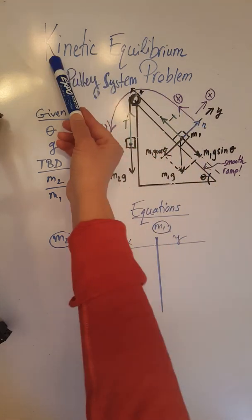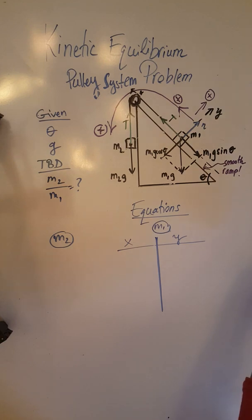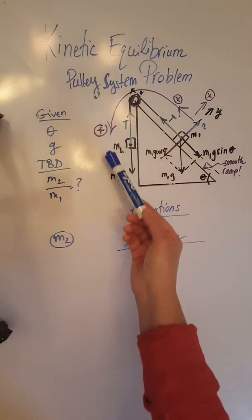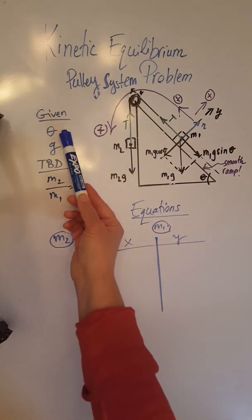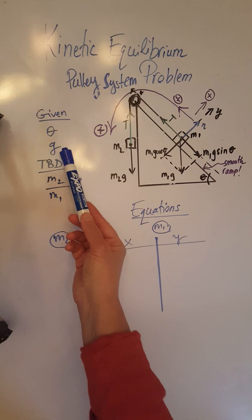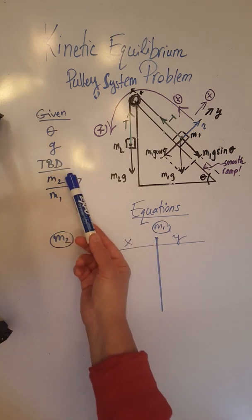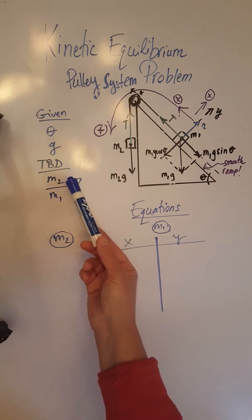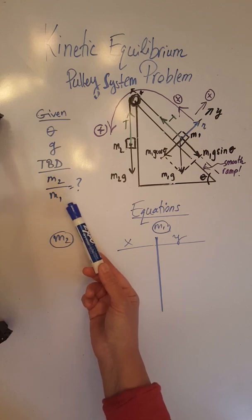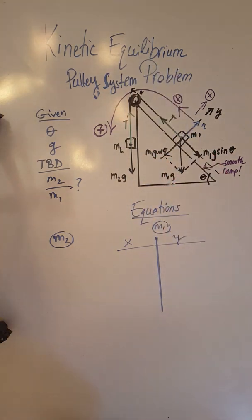Constant velocity because this is a kinetic equilibrium problem — as opposed to static equilibrium when the system or an object would be at rest, in this case the system is moving but does not accelerate. The givens are the angle of inclination theta and g, and what we need to calculate is the relationship between M2 and M1 — specifically the ratio M2 over M1 required for the system to be in kinetic equilibrium.